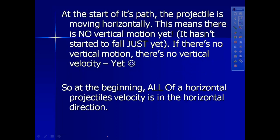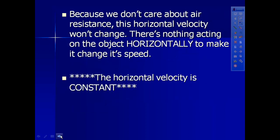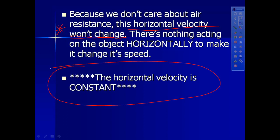A few key ideas about horizontal projectiles. At the start of its path, the projectile is moving horizontally, so there's no vertical motion just yet - it won't start experiencing a vertical velocity until it actually starts to fall. At the very beginning, all of the horizontal projectile's velocity is in the x direction. Because we don't care about air resistance, the horizontal velocity won't change. This is very, very important - star this, underline it. The horizontal velocity of a projectile is always constant.